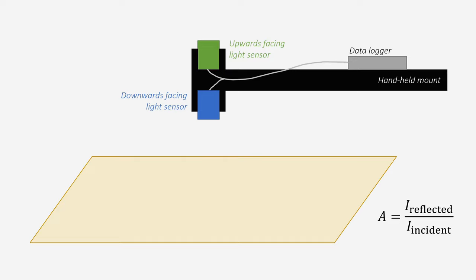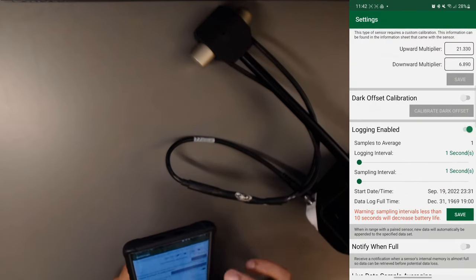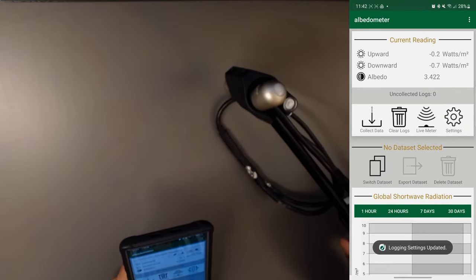We conducted an independent experiment to find out what the field of view for the albedometer is to find out how far above the surface to hold it. Turns out it's around 125 degrees. This means that you should hold the sensor about 5 centimeters above the surface that you are measuring. We can configure some logging settings and then get some test logs for later use in MATLAB.